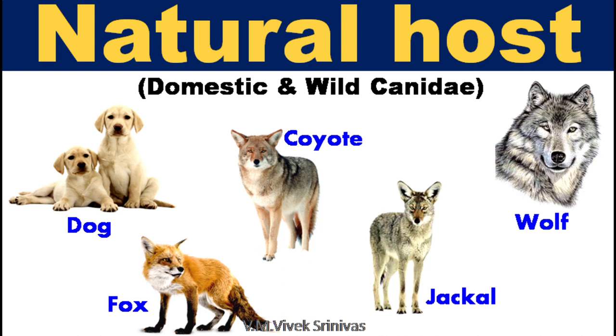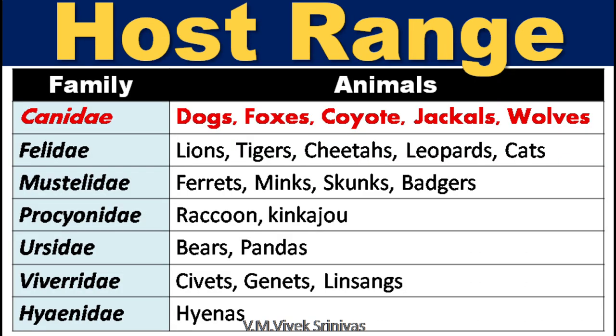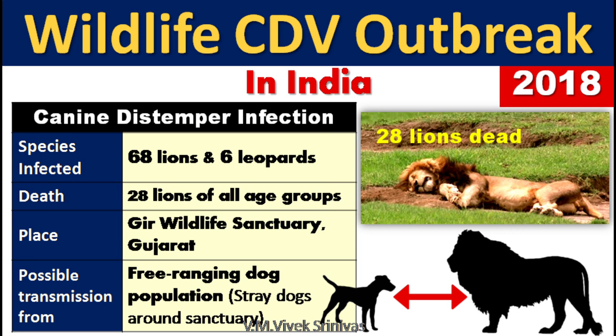Host range: This pantropic virus causes infection in domestic and wild canids such as dogs, fox, coyote, jackal, and wolf. Other wildlife also get this infection apart from canids, such as animals under the family Felidae, Mustelidae, Procyonidae, Ursidae, Viverridae, and Hyaenidae. During 2018, there was a severe canine distemper outbreak in Gir Wildlife Sanctuary, Gujarat. In this outbreak, 68 lions and 6 leopards were confirmed for this infection, and 28 lions of all age groups were dead. The free-ranging stray dog population around the sanctuary acted as the possible source of this virus to wildlife.